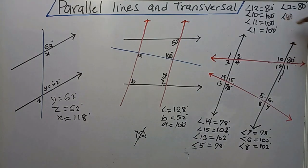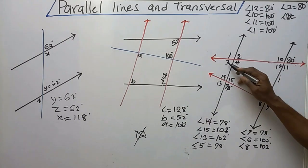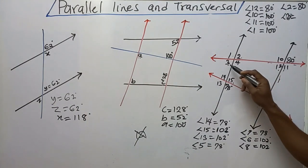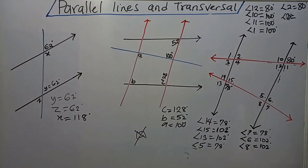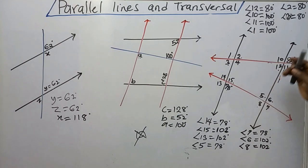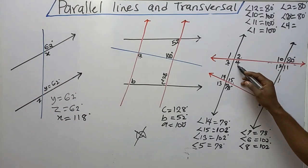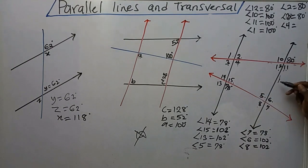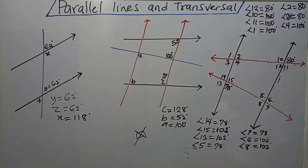I want to get angle 3. These are parallel lines — angle 3 is at the top of this line and angle 12 is at the top of that line. They are in the same position, so they are corresponding angles. So angle 3 is equal to 80 degrees. For angle 4: angle 4 is at the bottom of this line and angle 11 is at the bottom of the other line, so angle 4 is 100 degrees. We've now found all the angles.